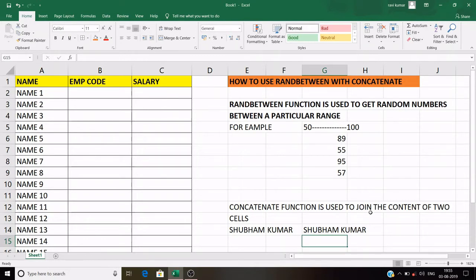So this is how we use CONCATENATE function to join the content of two cells. Now how can we use both these functions simultaneously? I have here, I have made a database for practice. First column is name, second is employee code, and the third is salary.